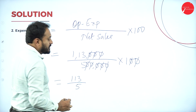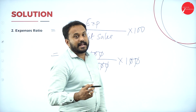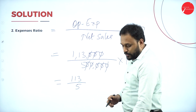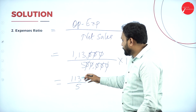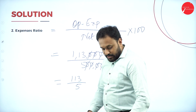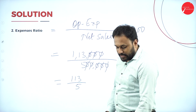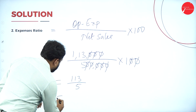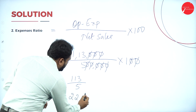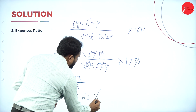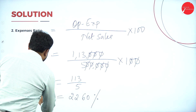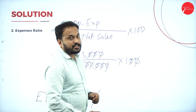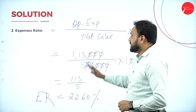So Expenses Ratio = 1,13,000 divided by 5 lakh, into 100. That gives us 113 divided by 5 = 22.60. So Expenses Ratio is equal to 22.60%. Always use your calculator properly to get accurate results.